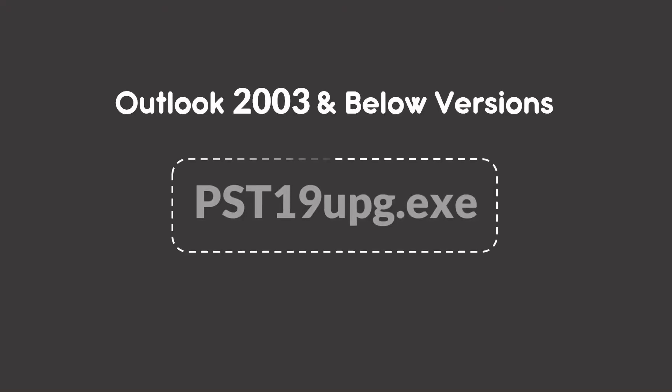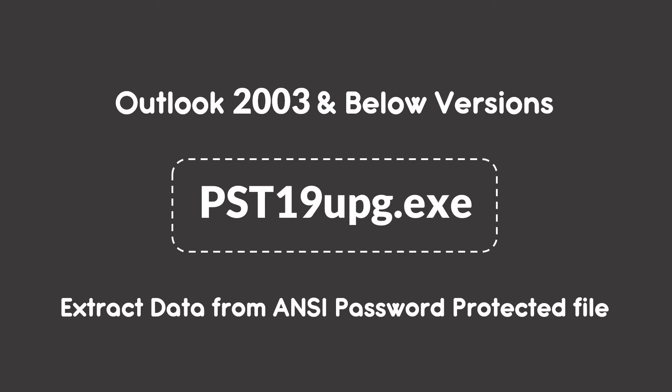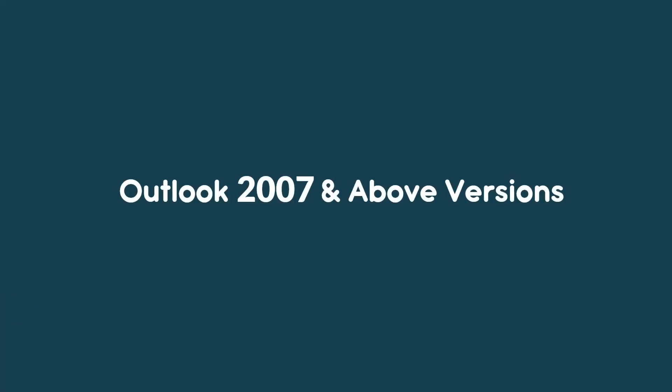For Outlook 2003 or below versions, PST19up.exe is a free utility developed by Microsoft to unlock password-protected Outlook data files by upgrading the PST to a new version. For Outlook 2007 or above versions, you can remove the password from the PST file manually in a few steps.